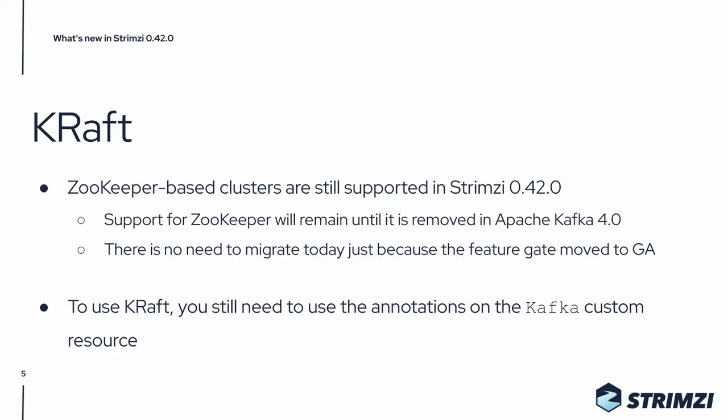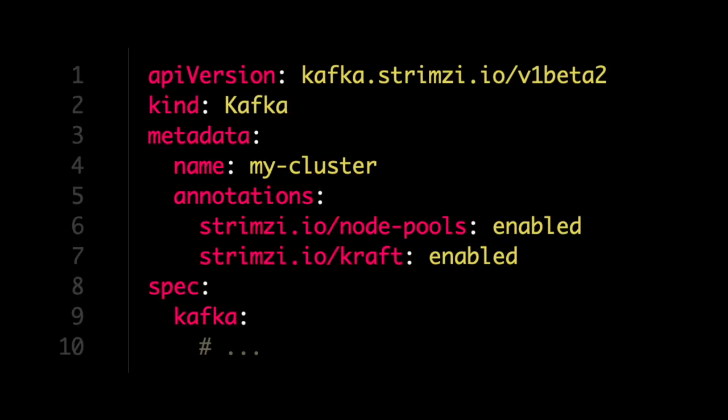If you want to use KRaft-based Kafka clusters, you still need to use the annotations on the Kafka custom resource. The strimzi.io/kraft annotation needs to be set to enabled, and you need to enable and use the Kafka node pools as well.